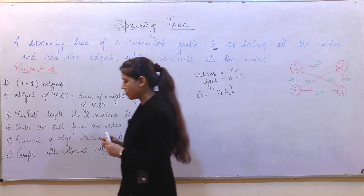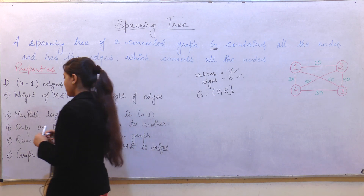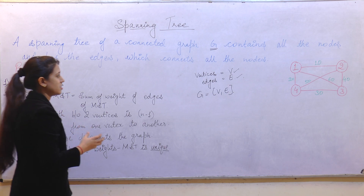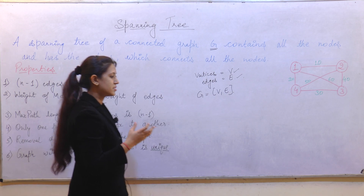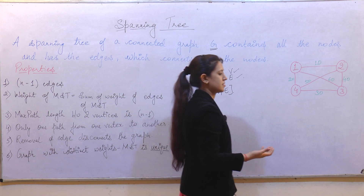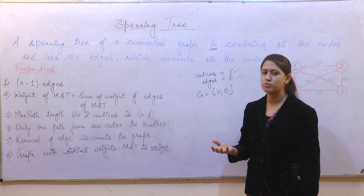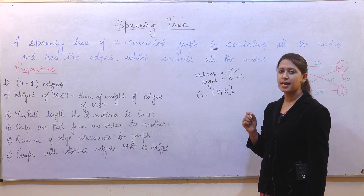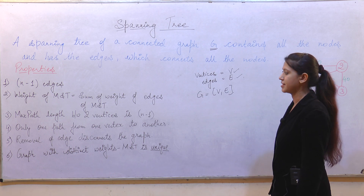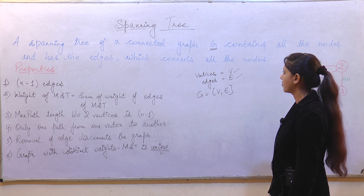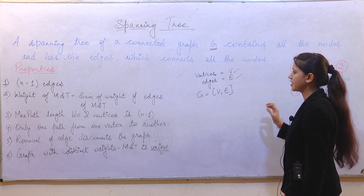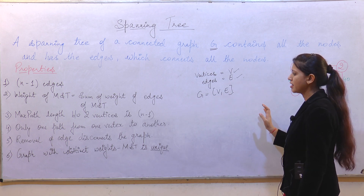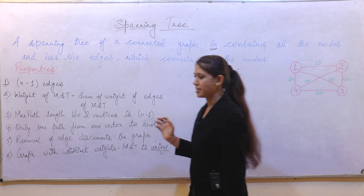The key point to remember here is that the edges which connect the vertices — or nodes — are always one less than the number of vertices. We will study the different properties of spanning tree with an example.